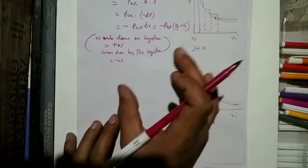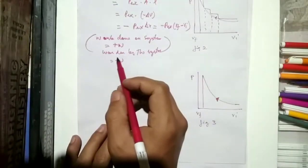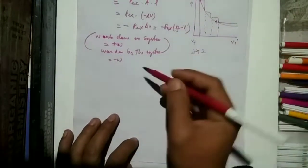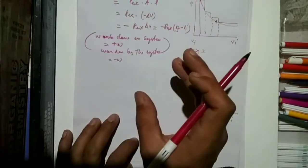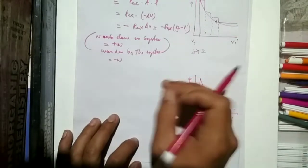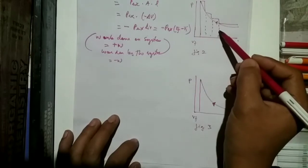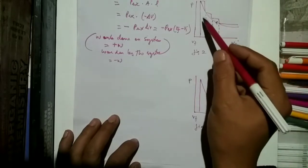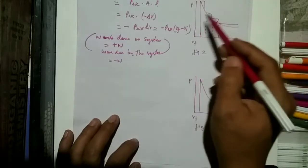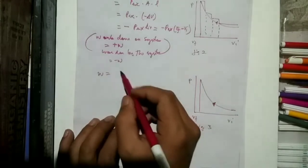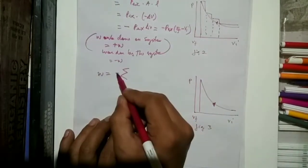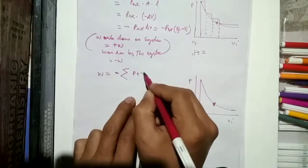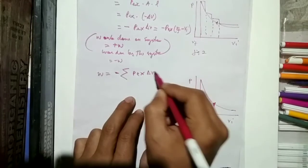If the external pressure is not constant and changes in a number of finite steps — increasing slowly and infinitesimally — the total work done is given by the summation: W = −ΣPₑₓ ΔV. When the pressure increases infinitesimally at each stage, the volume decreases by an infinitesimally small amount dV.